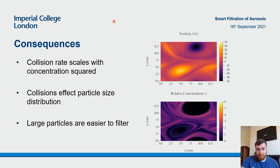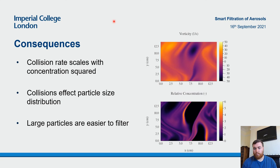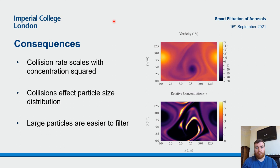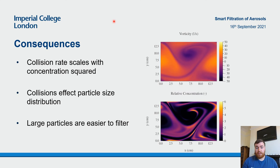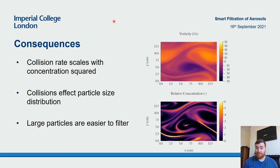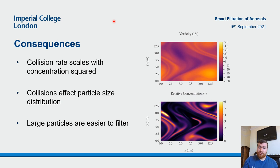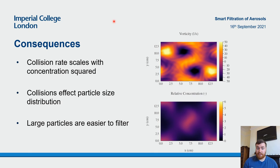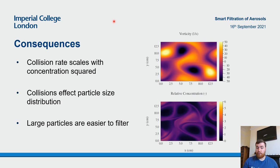So what are some of the consequences of preferential concentration, and why am I studying it as part of my PhD? Many properties such as the collision rate of aerosols actually scale with concentration squared, so if we increase the concentration by 10 we actually increase the collision rate by a factor of 100. Collisions affect the particle size distribution, so what I'm going to be looking at in my PhD is how we can manipulate preferential concentration to manipulate particle size distributions — ultimately trying to form large particles that are easier to filter out. Thank you for listening.